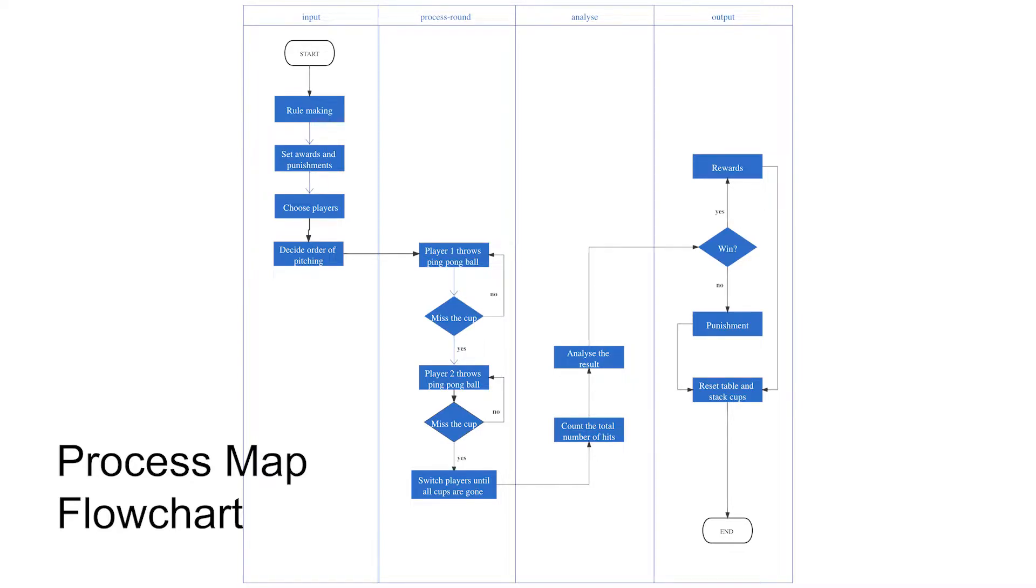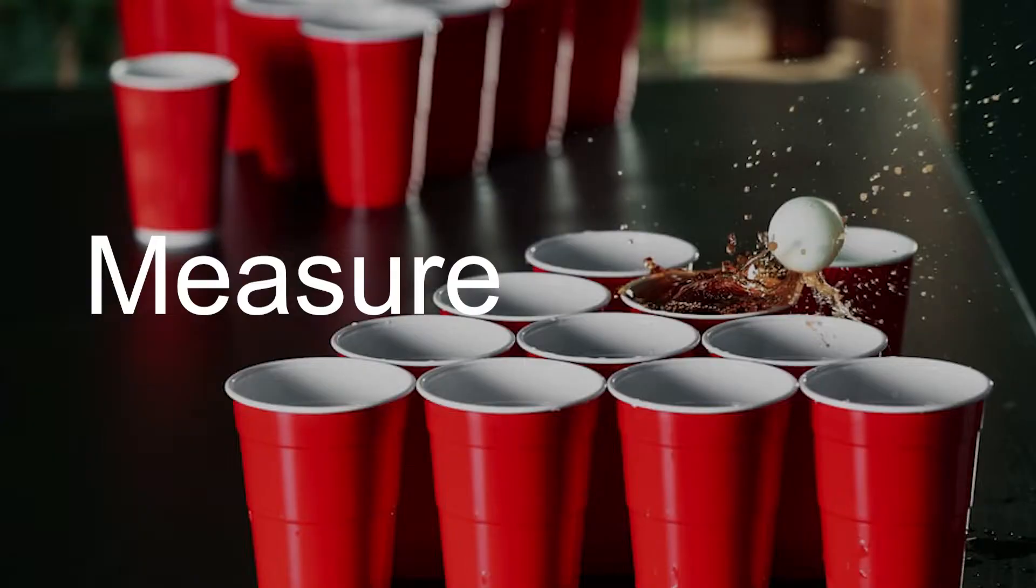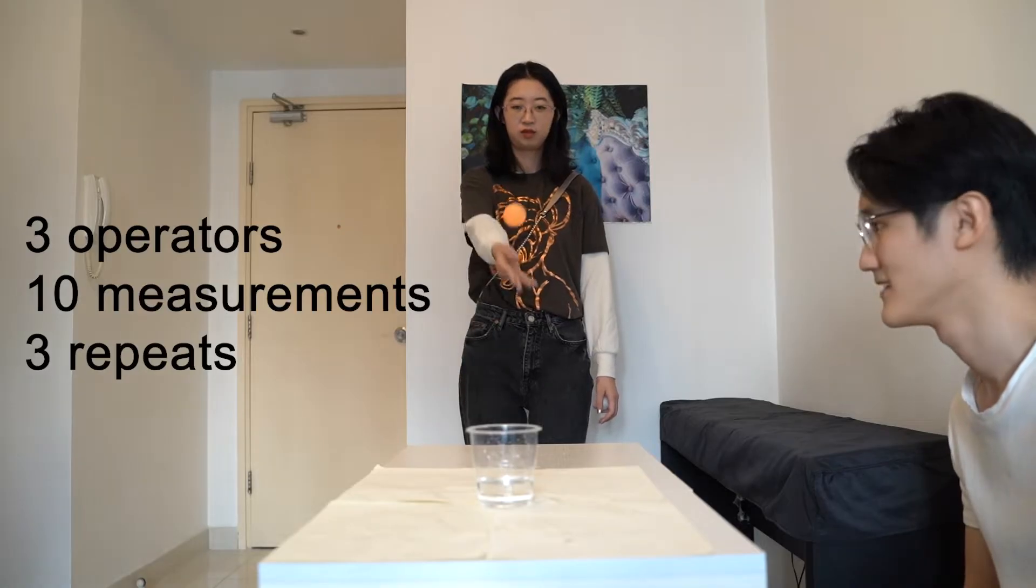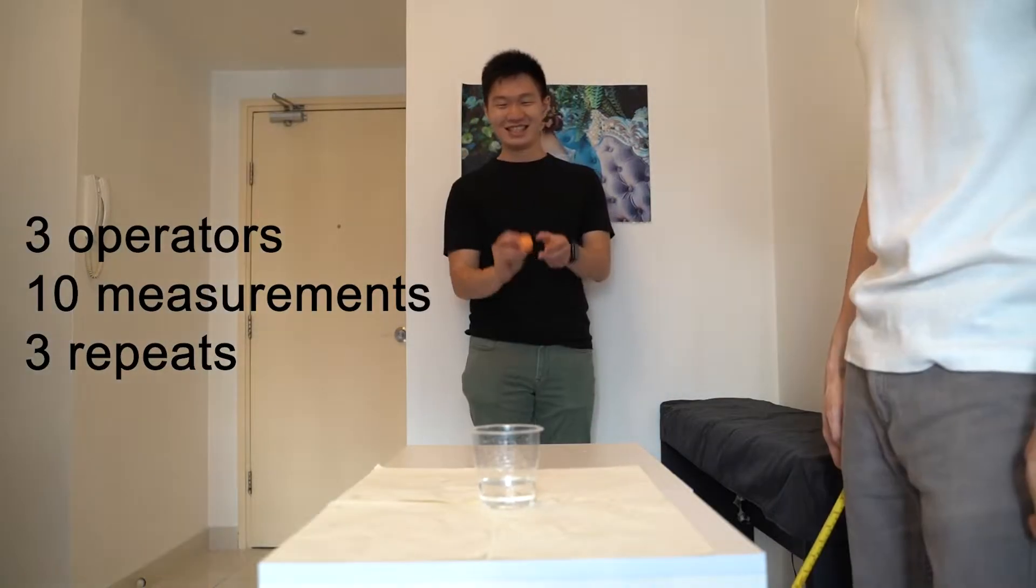Once we're able to map out how the beer pong game works, we go into the measure phase, where we begin our experimental setup to find the best and optimal method to throw the ping pong ball into the cup. We run experiments with three operators, ten measurements, and three repeats.